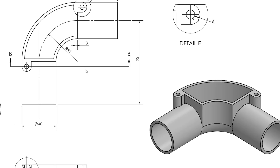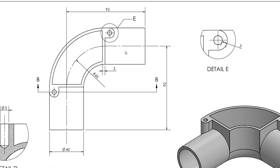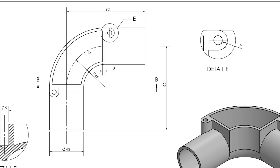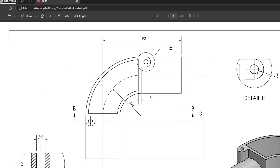When we look at that view, we can see a center line placed here, which dimension is 92mm from that point to that point. Similarly, from that point to that point is 92mm. Along with that, a fillet is applied here of R45. First of all, we will draw this center line.